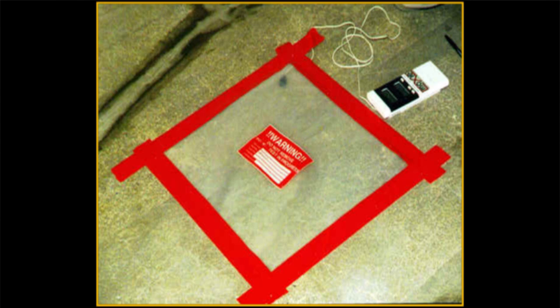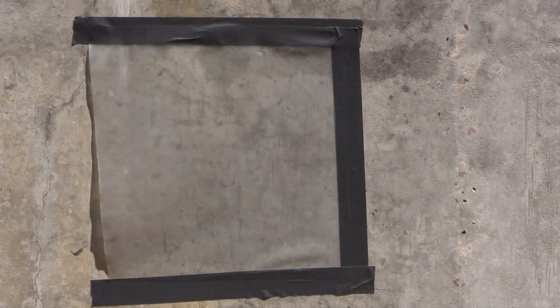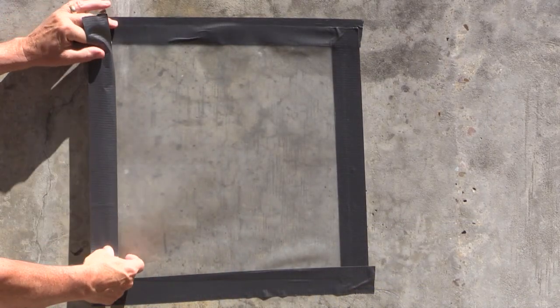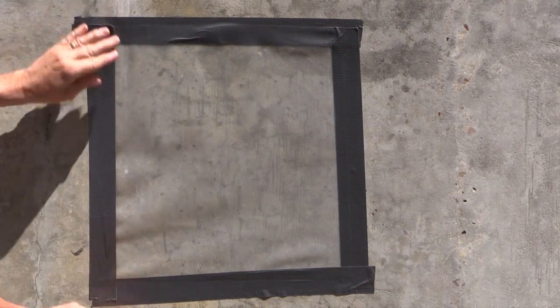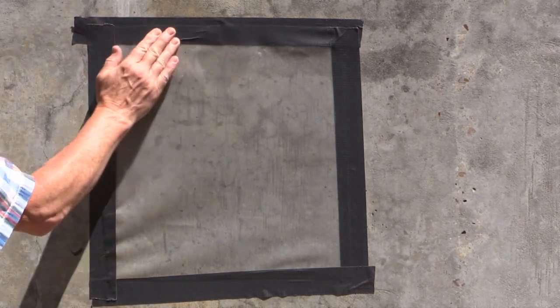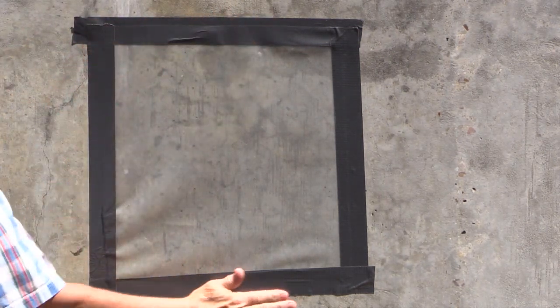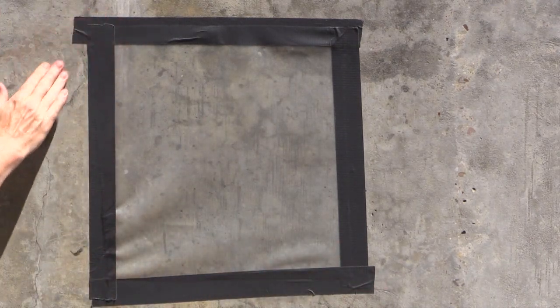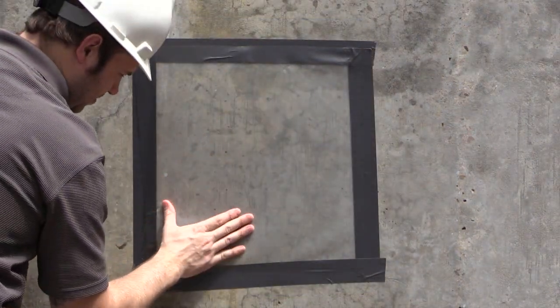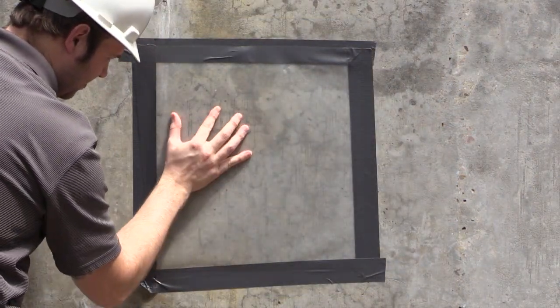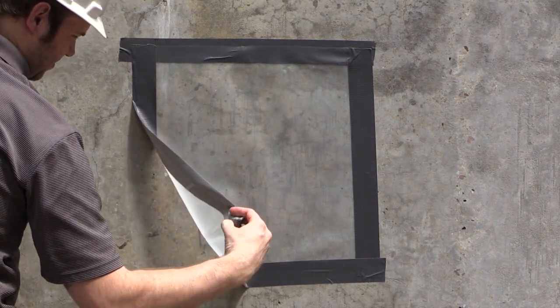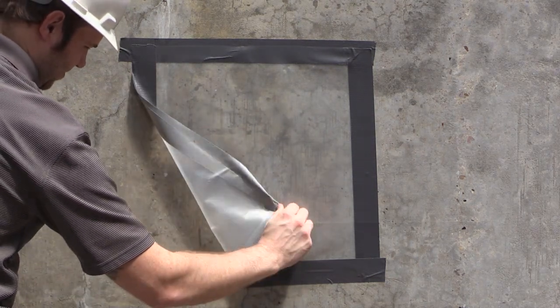The plastic sheet test is addressed in ASTM D-4263. Although the standard was developed for coating system preparation, it is also used in the flooring industry. This is a non-destructive test that requires firmly taping the perimeter of a sheet of plastic, about 18 inches by 18 inches in size, to the floor or wall and allowing it to remain in place for a minimum of 16 hours. At the end of the exposure period, the underside of the sheet and the surface of the concrete are visually examined for the presence of moisture.